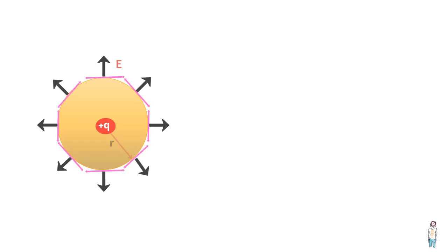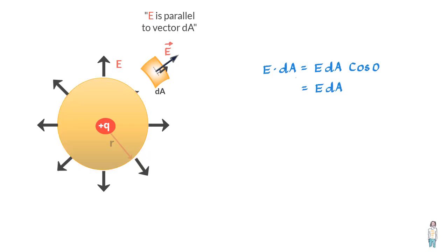Or in other words, each field vector is parallel to the area vector through which it comes out. So we can say that E dot dA is equal to E dA cos 0, which equals E dA. And this would be true for every dA element you take across the sphere's surface.